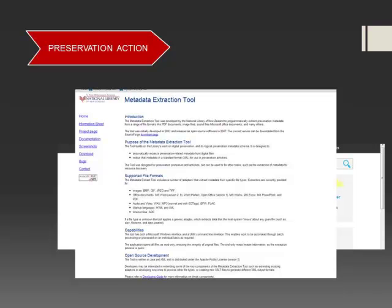The next tool was developed by the National Library of New Zealand. It's a metadata extraction tool that works with a variety of file formats to actually extract preservation-level metadata and output it in XML format. So you can have images, PDFs, whatever, and it will go in and pull out some preservation metadata for you and export it in an XML format so you can attach that to your metadata files.